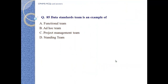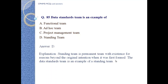Question number 85: A data standards team is an example of what type of team? A. Functional team, B. Ad hoc team, C. Project management team, D. Standing team. Answer D: Standing team. Explanation: A standing team is a permanent team with existence for a reason beyond the original intention when it was first formed. The data standards team is an example of a standing team.